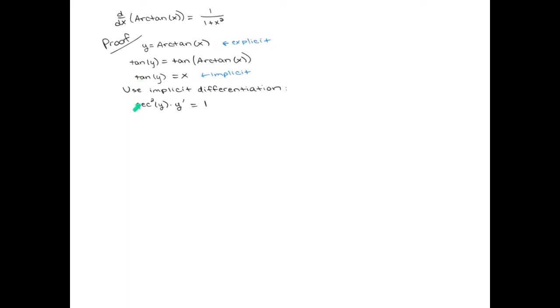The derivative of the outside function is secant squared. We just copy the y down, and then we multiply times the derivative of the inside function. This is classic implicit differentiation from the previous videos. The derivative of x is 1. Now we can solve for y prime. So dividing by secant squared, we get 1 over secant squared.